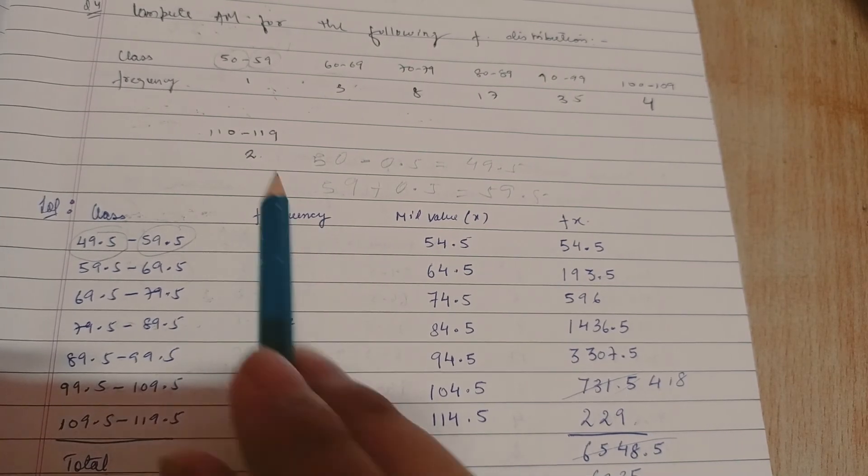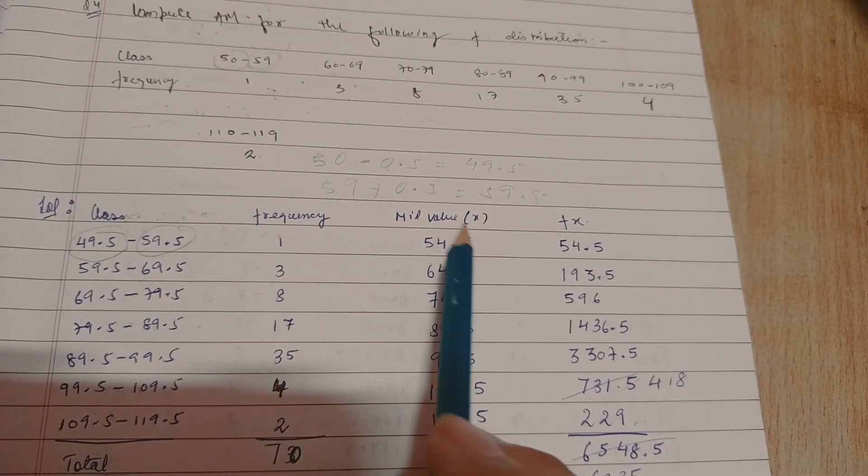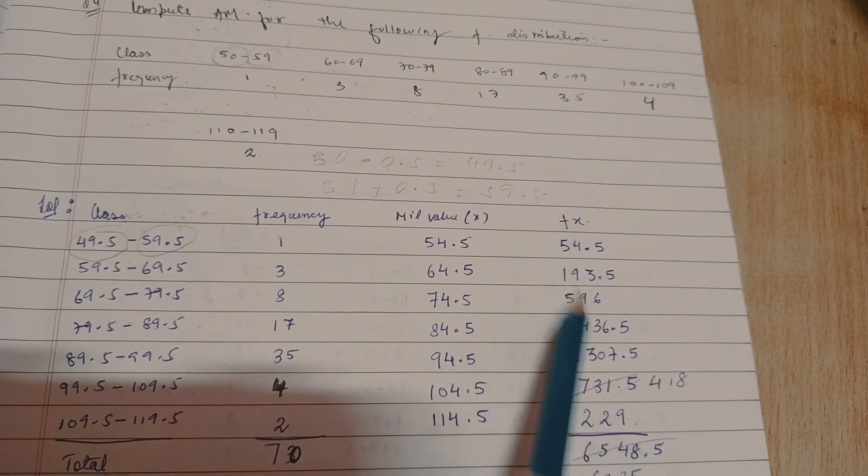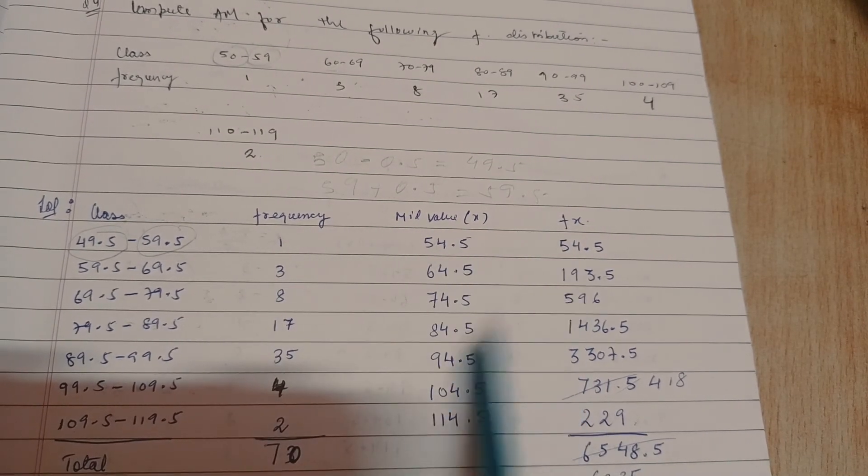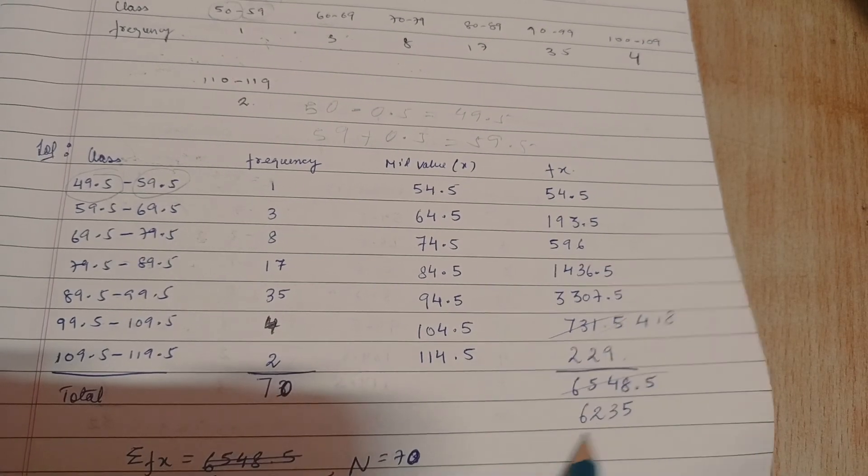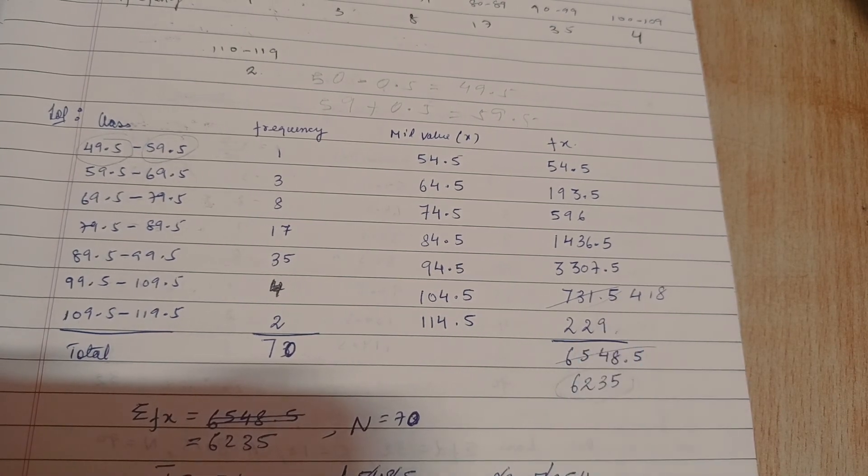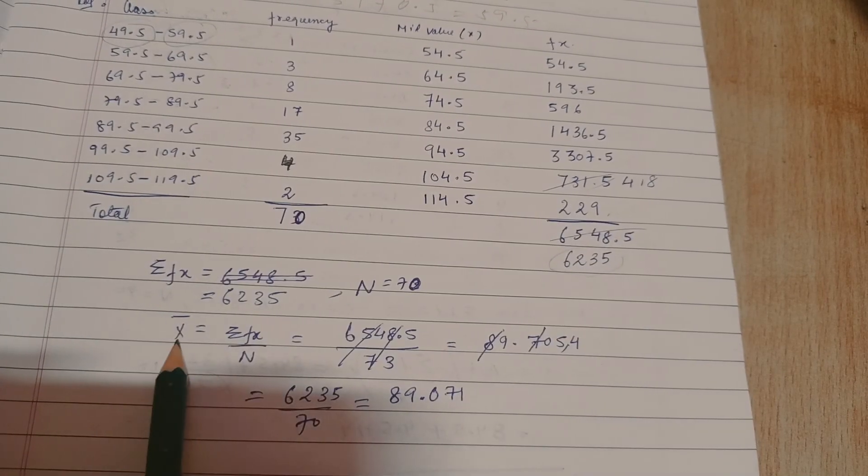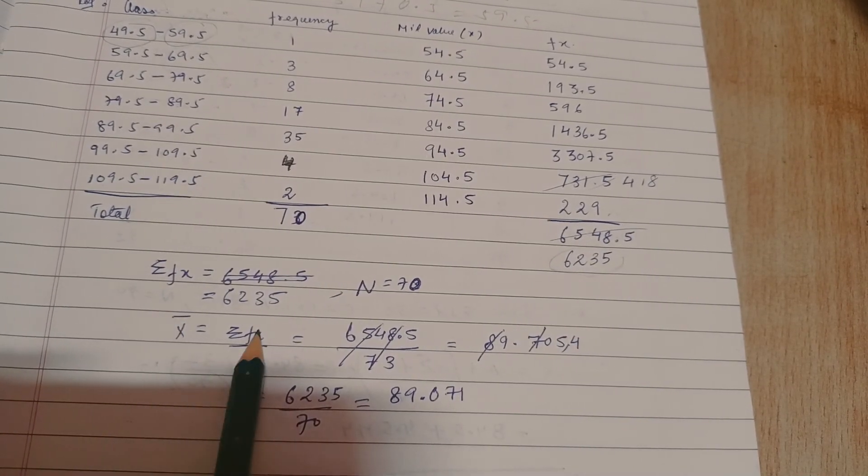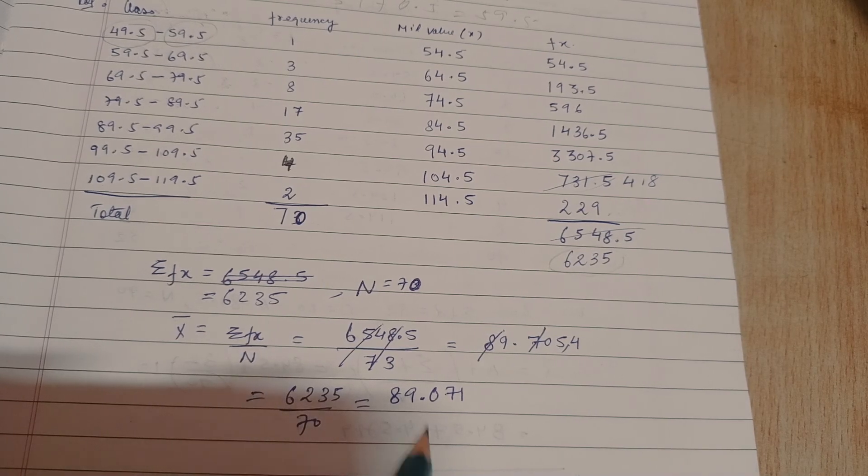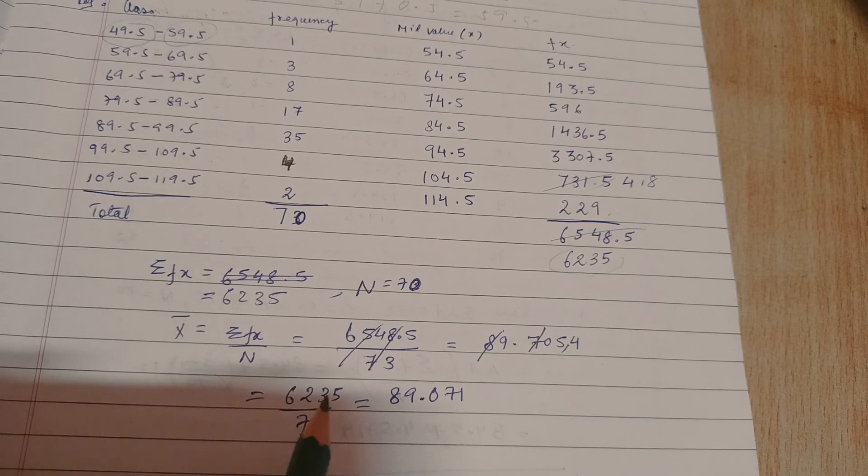Then we would write the respective frequency which are given. Then the mid value, same as we did in the previous question, this plus this divided by 2. Then fx, this is f and this is x, multiply, and then total here 70 and the total fx value would be 6238. Again, the formula is the same. Arithmetic mean equals sigma fx by capital N. That value we will put, 89.071. So this is the arithmetic mean we got. So this is all for finding mean. These are all possible questions which you would get in your CAT, FAT or quizzes from this topic.